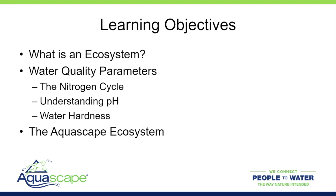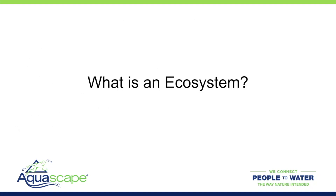We have a few different learning objectives today. First, I want to discuss what an actual ecosystem is. After that, I want to get into specific water quality parameters — the nitrogen cycle, understanding pH as well as hardness, and how all those different things relate to one another and impact actual water quality. Once that's done, we'll be able to break down the Aquascape ecosystem so you can see how all the individual pieces and parts work together to create beautiful aquatic features.